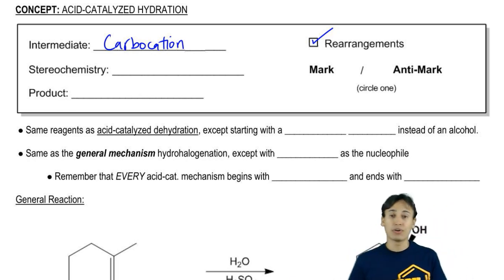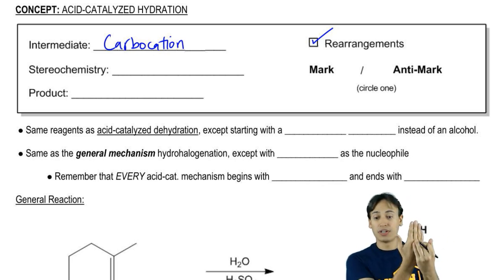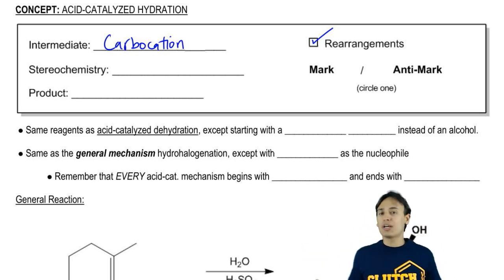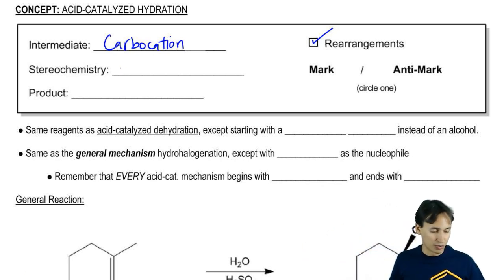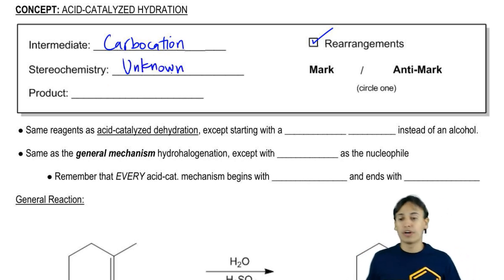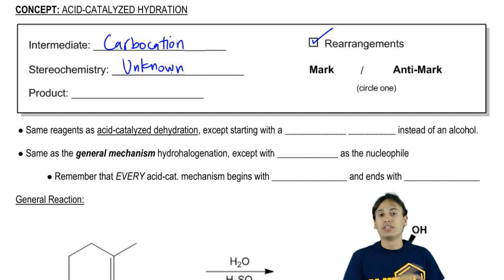One thing about carbocations and their stereochemistry is that they're very unpredictable. Carbocations, remember, they're trigonal planar so they can be attacked either from the front or from the back. What that means is that the stereochemistry of our products is really still going to be unknown - unknown because we don't know where it's hitting. There may be several chiral centers produced. I don't want to say anything more than just unknown. There's usually a big mixture of chiral products in these reactions.